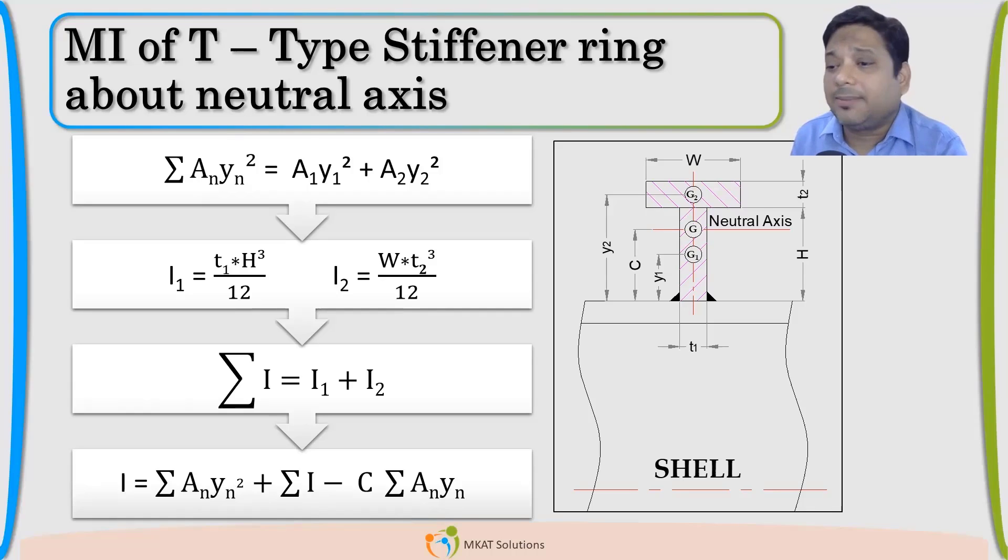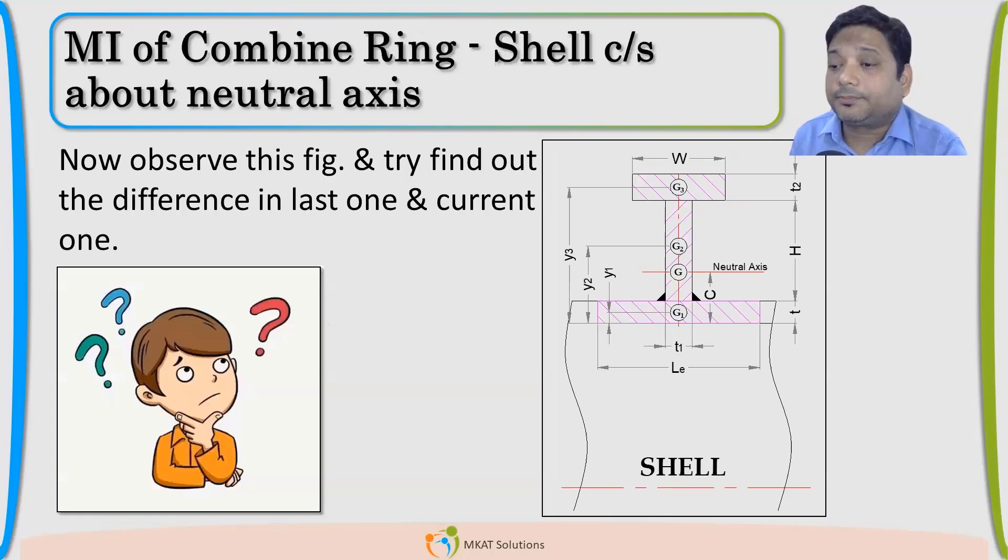You can have now I type, channel, angle, anything. I will take one more example. Let us take one section. Many times, if you remember in UG29, there is another formula with shell also contributing as a stiffener.